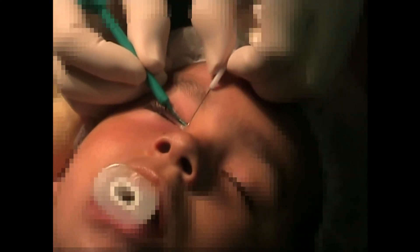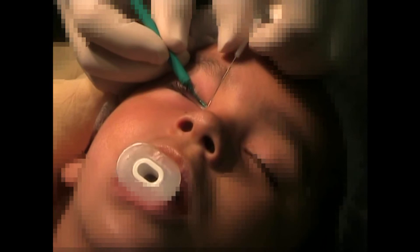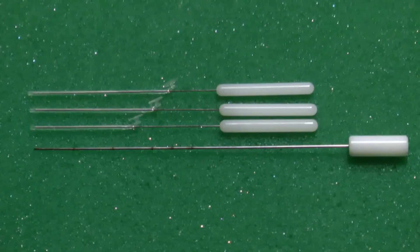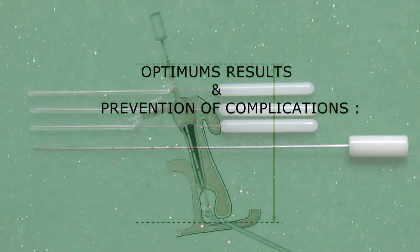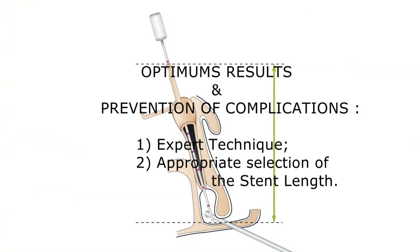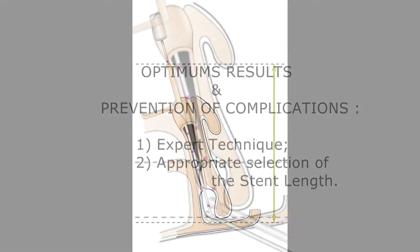The stent is removed as an office procedure with a forceps instrument by pulling on the collaret. This removal is painless and does not require a general anesthetic. Optimum results and the prevention of complications depend directly on two elements: expert technique and appropriate selection of the stent length.